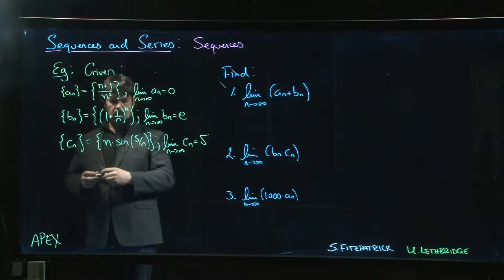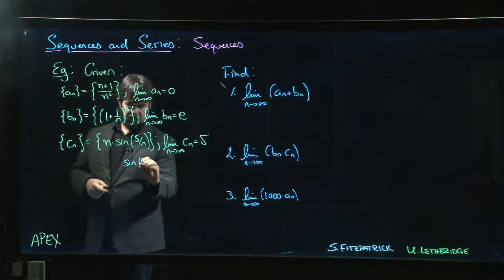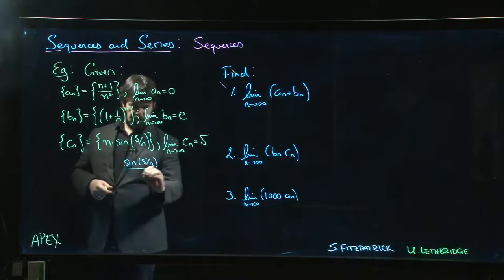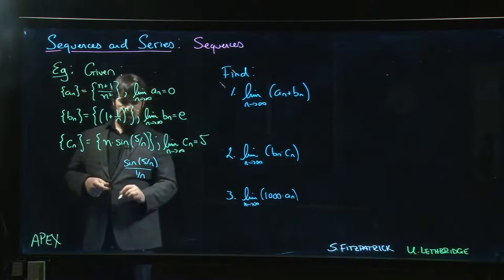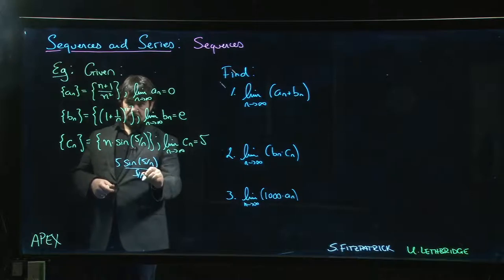But if we wrote this as sine five over n - if we think of this as sine five over n divided by one over n - oh that's a zero over zero limit. And in fact if we put a five here and a five here, well now this is like a sine theta over theta limit.